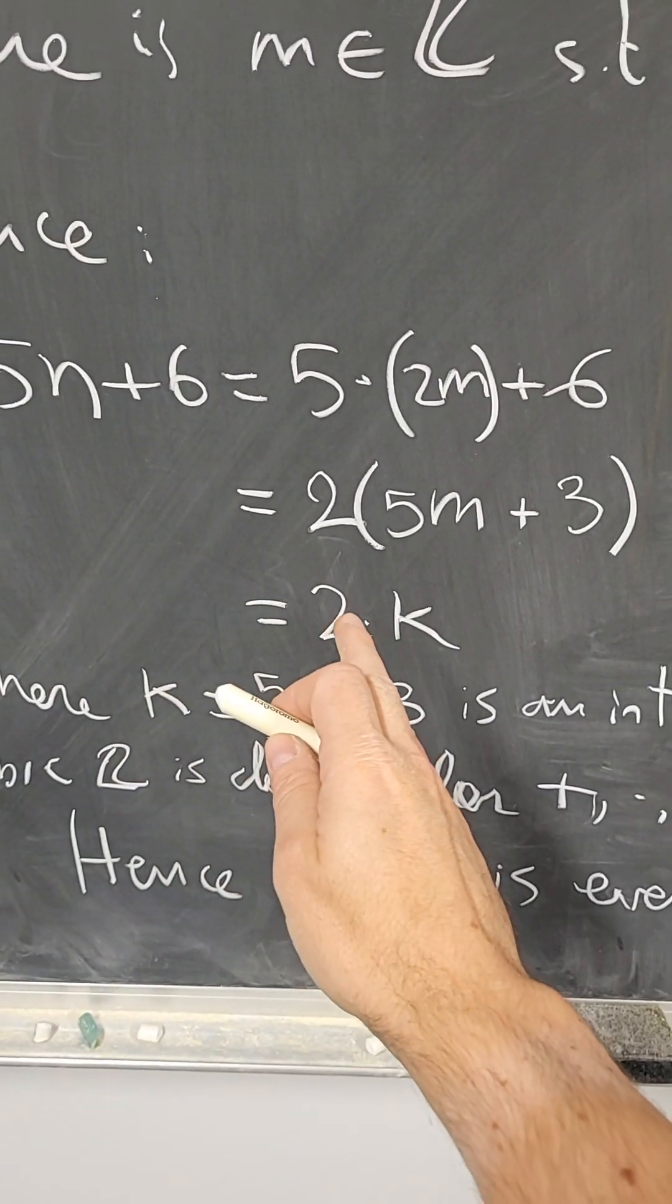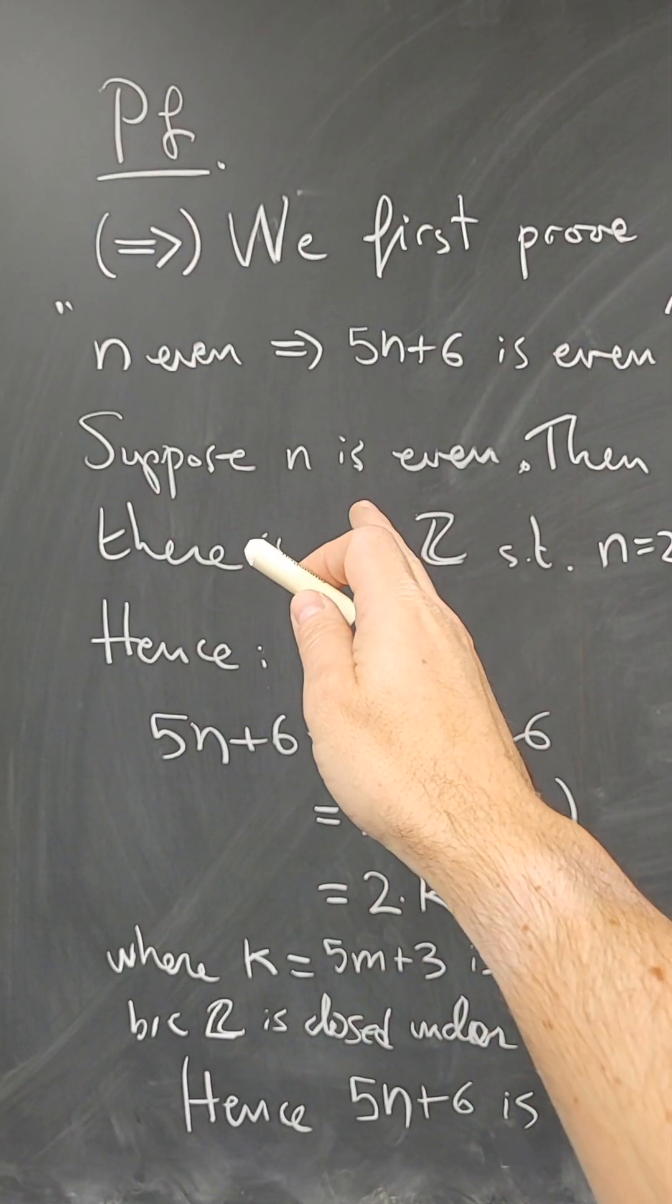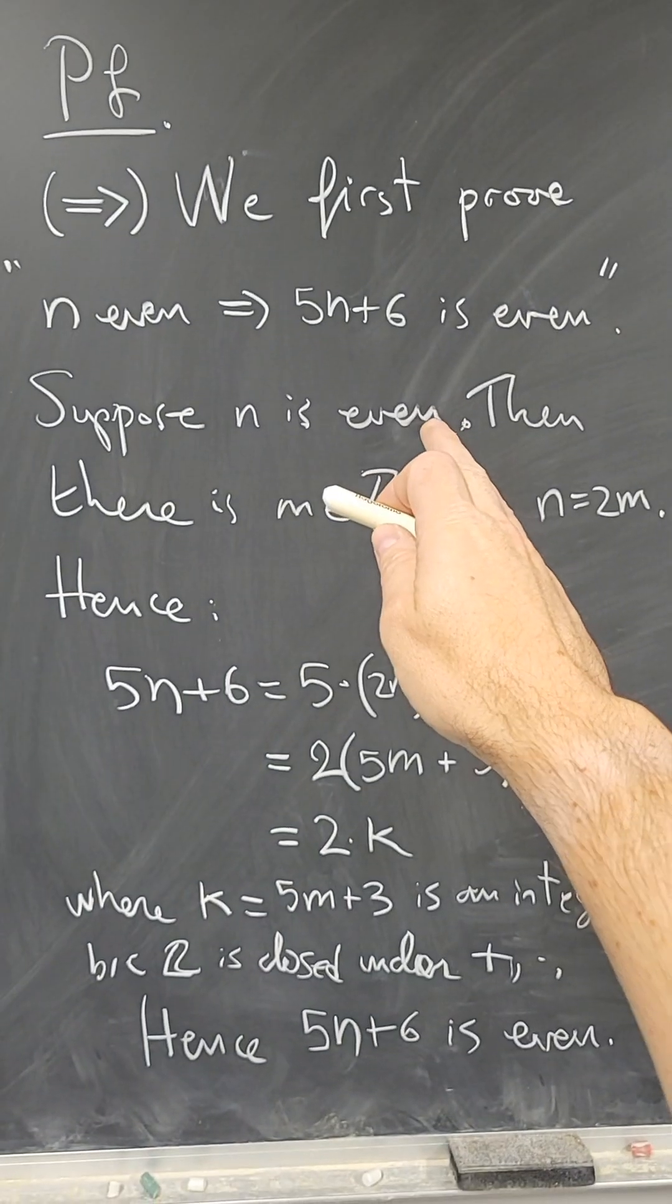k itself is an integer, and therefore, 5n plus 6 is twice an integer, and therefore, 5n plus 6 is even, which is what we wanted to prove in this direction.